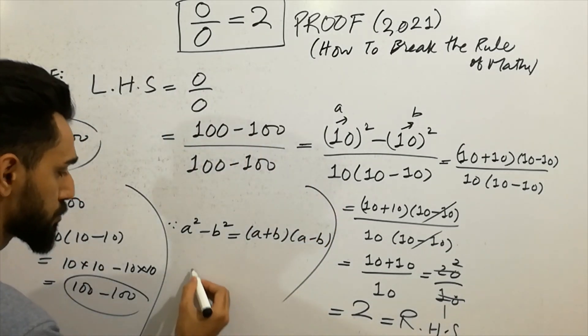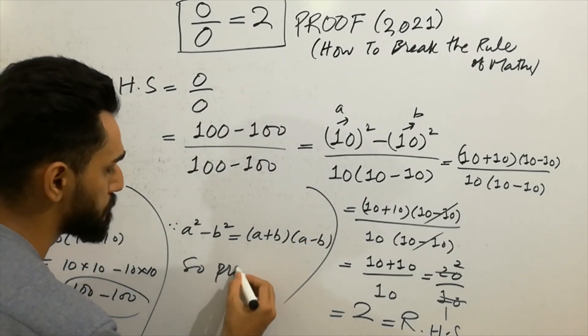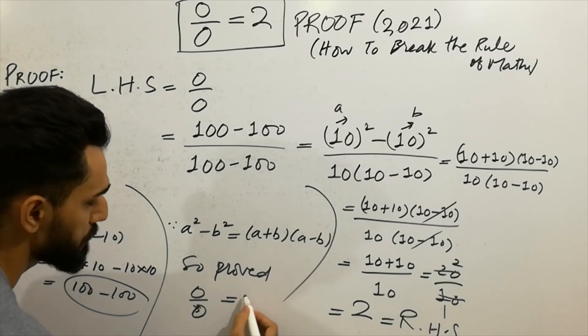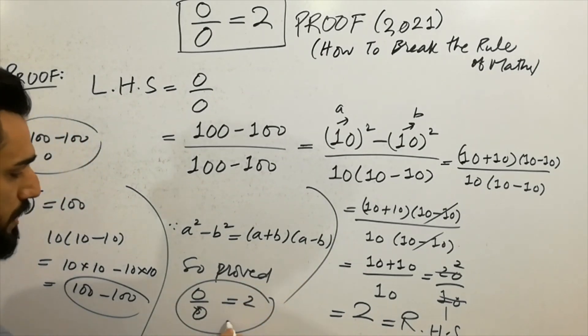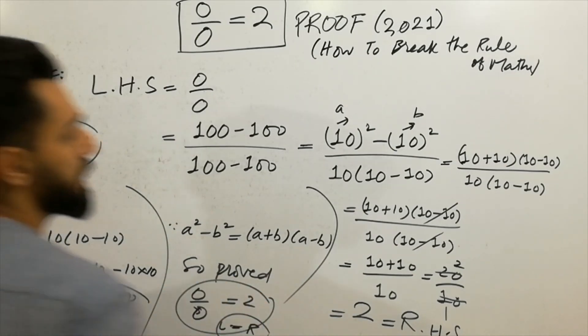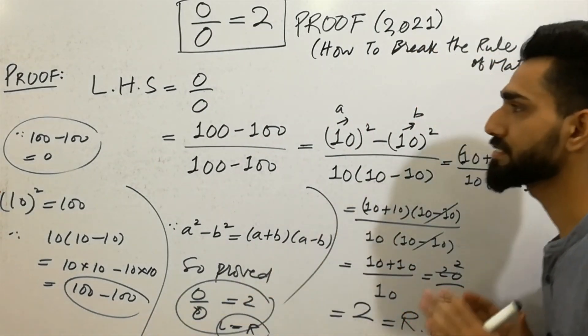So I have proved that very shortcut method: 0 by 0 can be written as equal to 2, because left hand side is equal to right hand side. I hope that you have cleared the concepts about that.